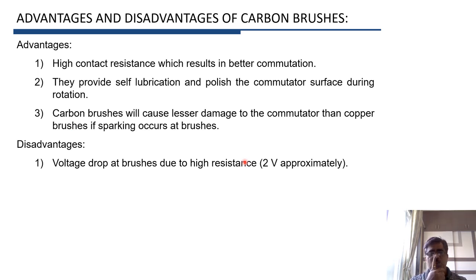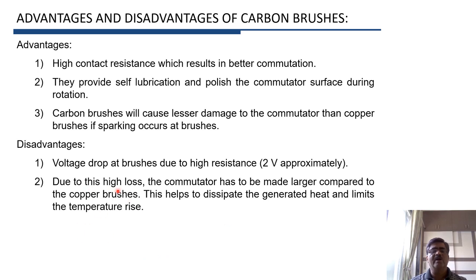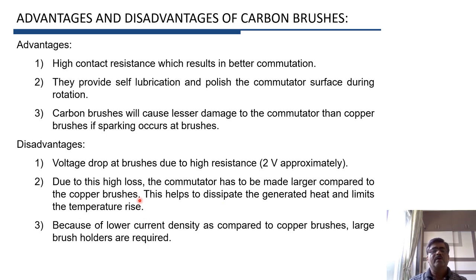However, there are some disadvantages. The main disadvantage is that due to the high resistance of carbon brushes there will be a voltage drop at the brushes, approximately of the order of 2 volts. Another disadvantage is that because of this high loss, we have to increase the size of the commutator to dissipate the generated heat and keep the temperature rise within permissible limits. Also, the current density of carbon brushes is lower compared to copper brushes, so the brush size and brush holders are also larger.